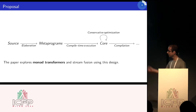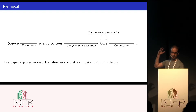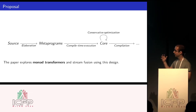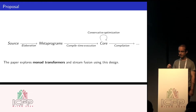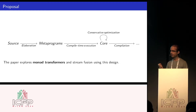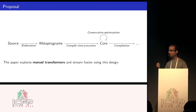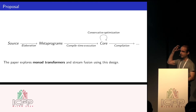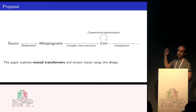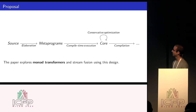The proposal here is to have the source language, do elaboration, but what we get after this round of elaboration is actually a bunch of metaprograms - a bunch of code generating programs. After that, we execute all the metaprograms which generate code, and then we get some core syntax. At that point, it should be sufficient to only do conservative optimizations, which are also relatively predictable. The user control - the predictability and fine control of programmers - should extend from the source all the way to this core. The paper explores in particular monad transformers and stream fusion using this design.